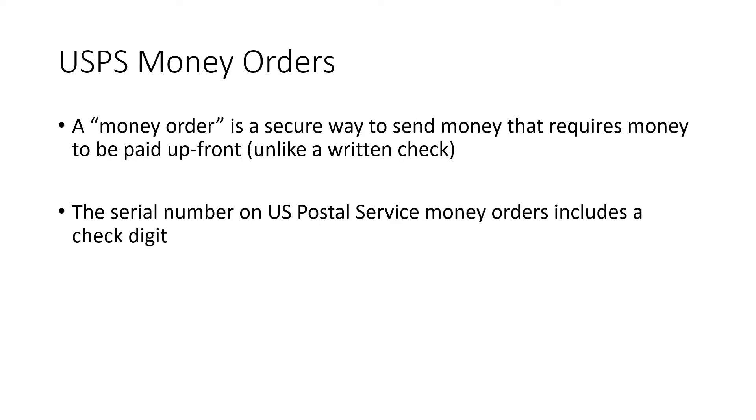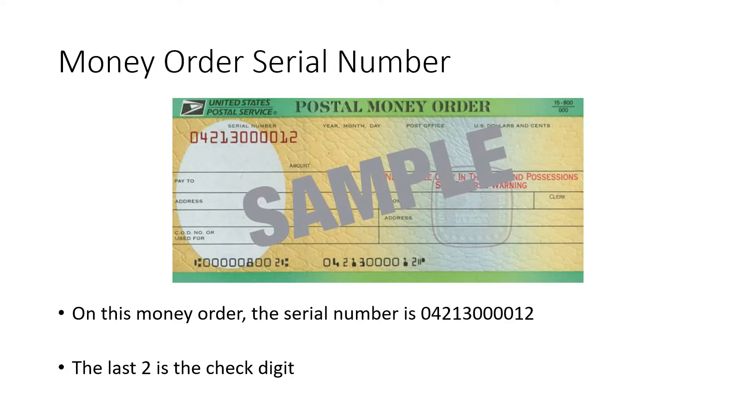An example of a system that uses this is for U.S. Postal Service money orders. If you don't know, a money order is a secure way to send money that requires money to be paid upfront. Unlike a written check where only when the check is cashed do you check to see if there's actually enough money in the account, for a money order you pay upfront. So it's considered a secure way to send money. And there's a serial number on every Postal Service money order that includes a check digit. Here's a visual representation of what a money order looks like.